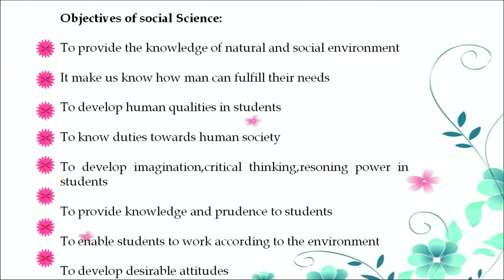The objectives of the social science curriculum in the modern era include: to provide knowledge of the natural and social environment; to help students understand how people fulfill their needs; to develop human qualities in students; to develop imagination, critical thinking, and reasoning power; to provide knowledge and prudence; to enable students to work according to the environment; to develop desirable attitudes; to provide training in good behavior; to develop fundamental proficiencies; to develop comparison, analysis, summary, and evaluation; and to develop a feeling of cooperation and universal brotherhood.